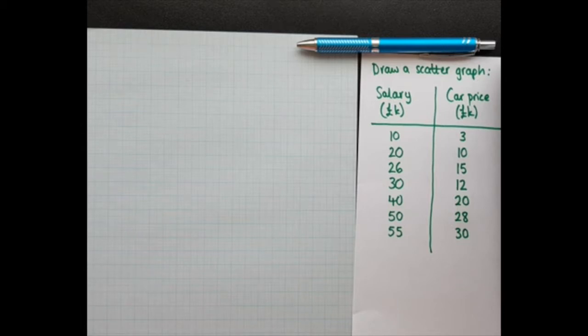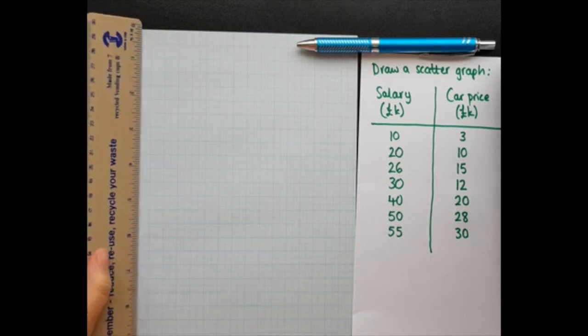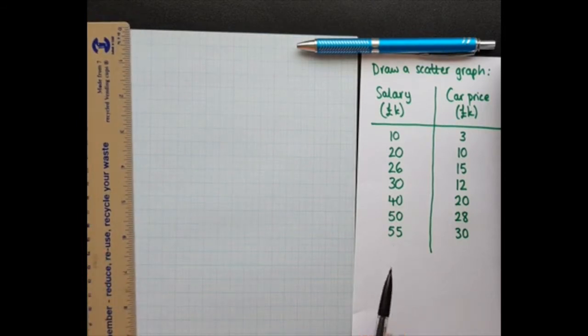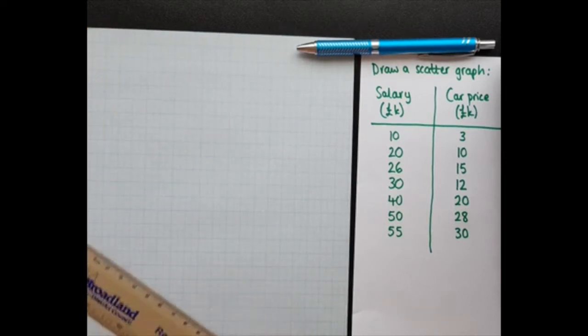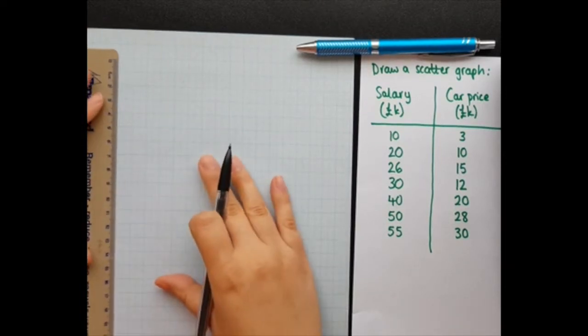So let's have a think about these axes because we want to look at the data set to figure out how big the axis wants to be. I'm going to have salary along the bottom and that goes up to 55. I'm going to round that up to 60 to give me a nice even number, and then my y-axis car price is going to go up to 30. That's nice and round already.